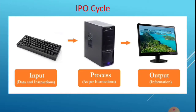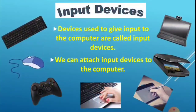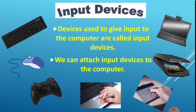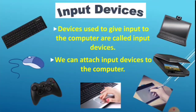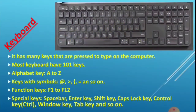The IPO cycle is how the computer system works. Next topic is input devices. The devices that are used to give input to the computer are called input devices. We can attach input devices to the computer — for example: keyboard, mouse, joystick, touchpad, scanner, and web camera. All of these are input devices.